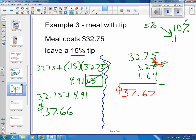Okay, so there's the two ways of doing it. Find the 10% by moving the decimal one place, add half more onto that, or actually multiply by the 0.15 and add it to the 32.75. Whichever way you do it, you'll get to the same answer.